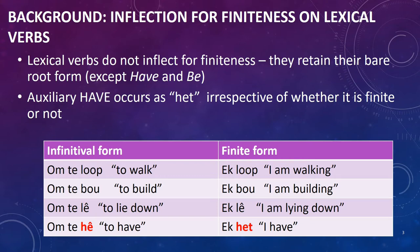When we talk about verbs in Afrikaans, it's important to note that lexical verbs do not inflect for finiteness, but they retain their bare root form, with exceptions of have and be. If you look at the table below, you'll notice that the infinitival form has exactly the same form as the finite form. The exception is have and be. The infinitival form of have is 'hê', which is actually a lexical verb. When that verb occurs in situations not linked to the overt infinitive, it takes the form 'het'. That means that 'het' is both the finite form and the non-finite form of the verb, excepting true infinitives. Note that have and be can both be auxiliaries, and we're going to be looking at the auxiliaries of have in this paper.